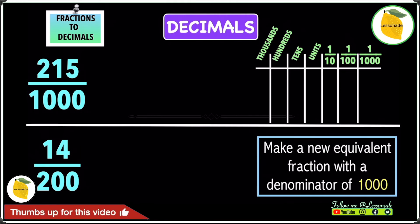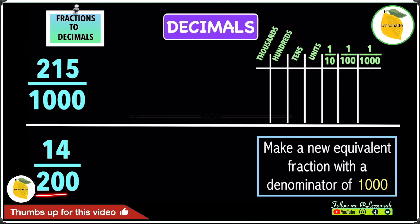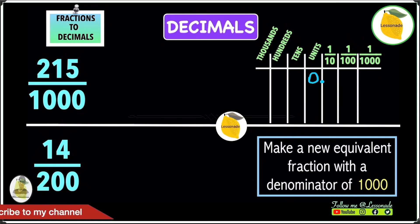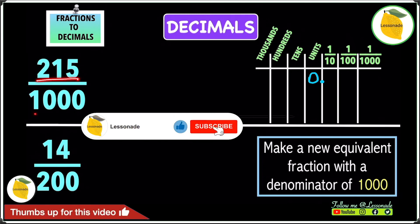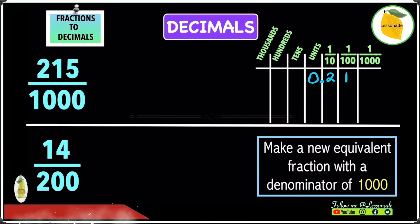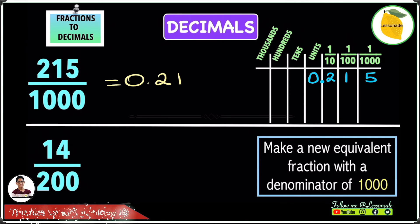Now let's convert 250 over 1000 and 14 over 200 into decimals. For 215 over 1000, there are no whole numbers, so we write a 0 in the units column. We then write 215 after the decimal point — the 2 goes in the tenths column, the 1 in the hundredths column, and the 5 in the thousandths column — giving an answer of 0.215.